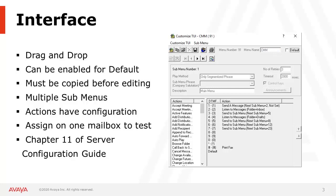Once a copy is made, you can add key presses, remove options, and if you double-click the Actions, there is additional configuration that can be made. For example, if you double-click the Listen to Messages action, you can change the Sort Order, Enable Autoplay, and configure the Envelope Information Items.